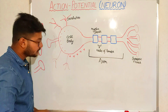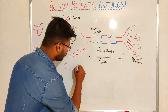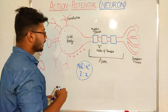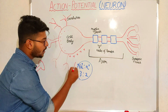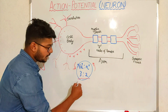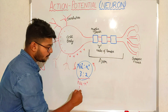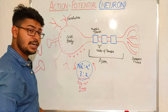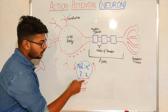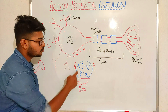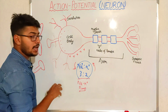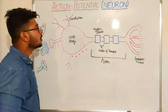This negative-inside and positive-outside charge distribution is due to the sodium-to-potassium ratio of 3:2. This means three sodium ions come out of the cell and two potassium ions enter the cell via the sodium-potassium pump. This pump acts as an active transporter of sodium and potassium ions, maintaining the resting condition of an excitable tissue or excitable cell.